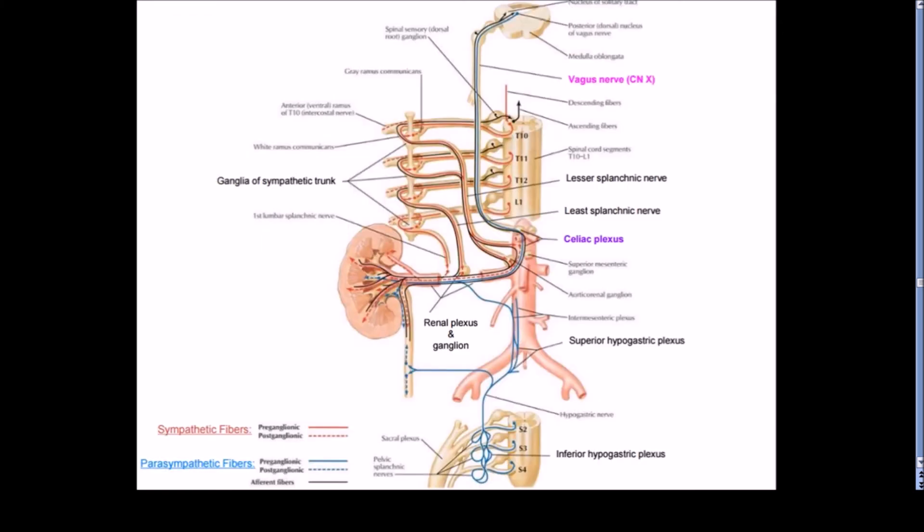Nerve supply of kidney: the sympathetic fibers are derived from the renal plexuses. The preganglionic fibers take origin from the T10 to L1 spinal cord segments. This is responsible for the location of referred pain in renal colic from loin to infraumbilical part of the anterior abdominal wall, along the distribution of mentioned spinal nerves. The sympathetics are primarily vasomotor. They also supply the juxtaglomerular cells. The parasympathetics are derived from the vagus nerve.